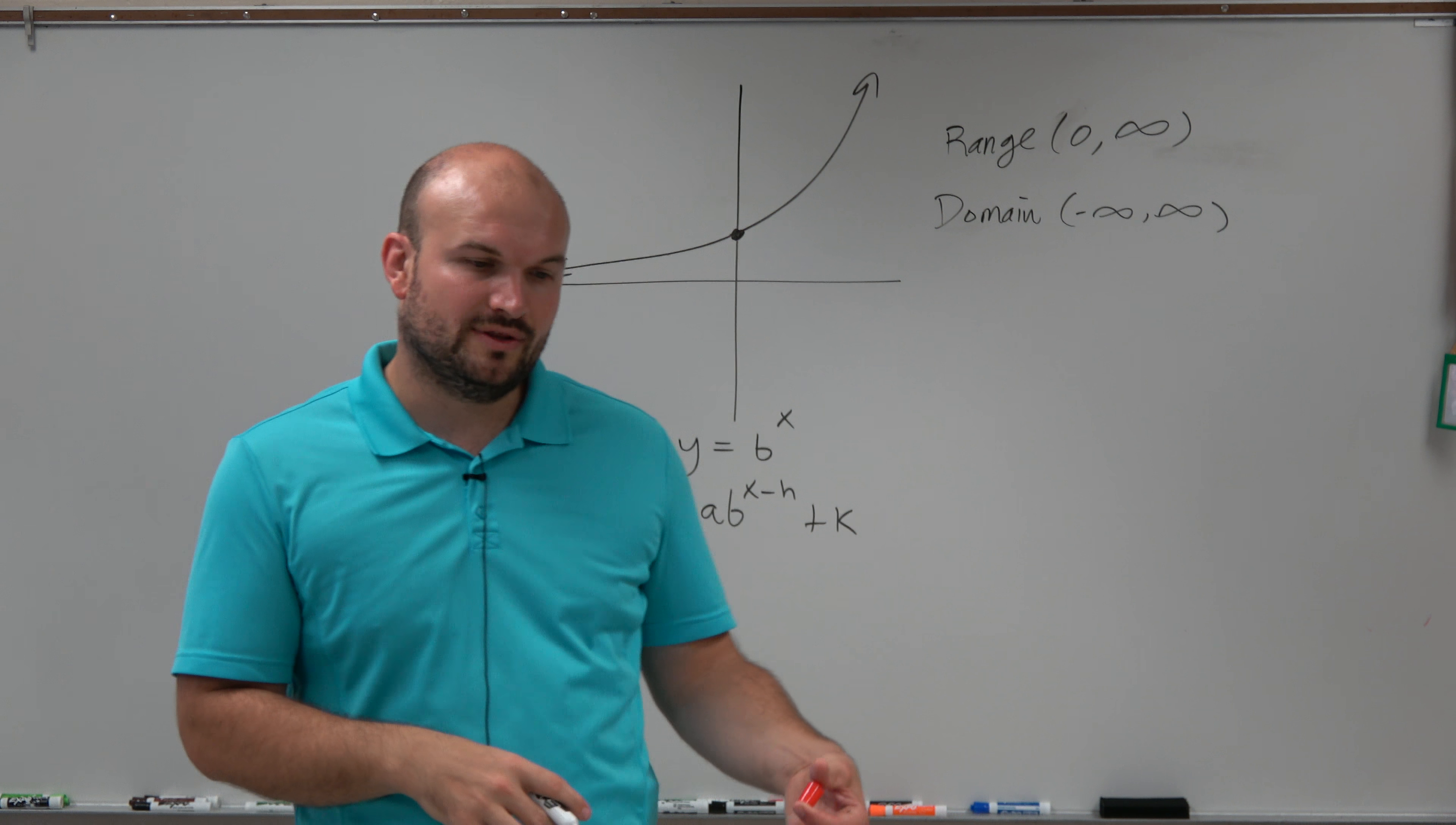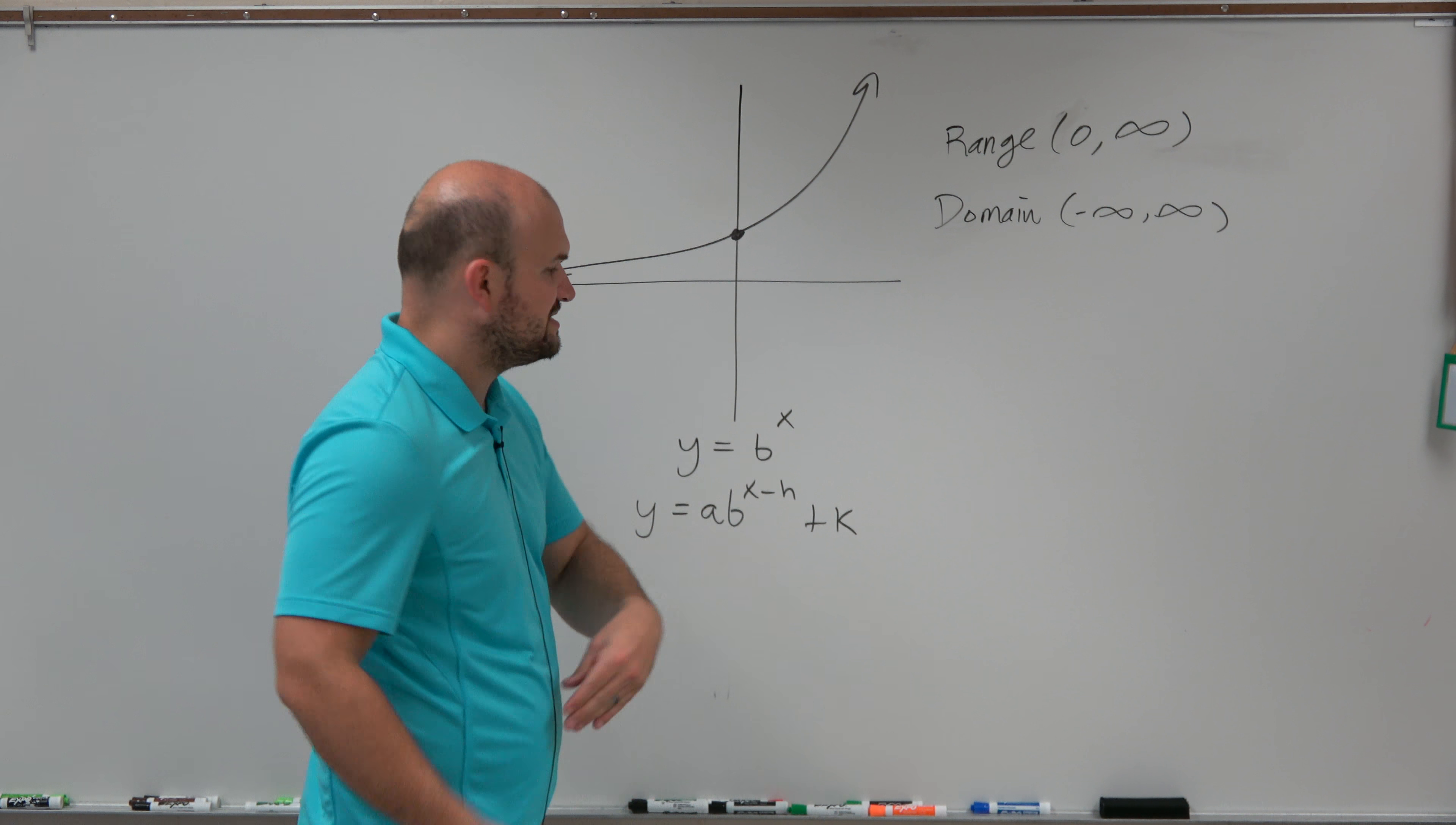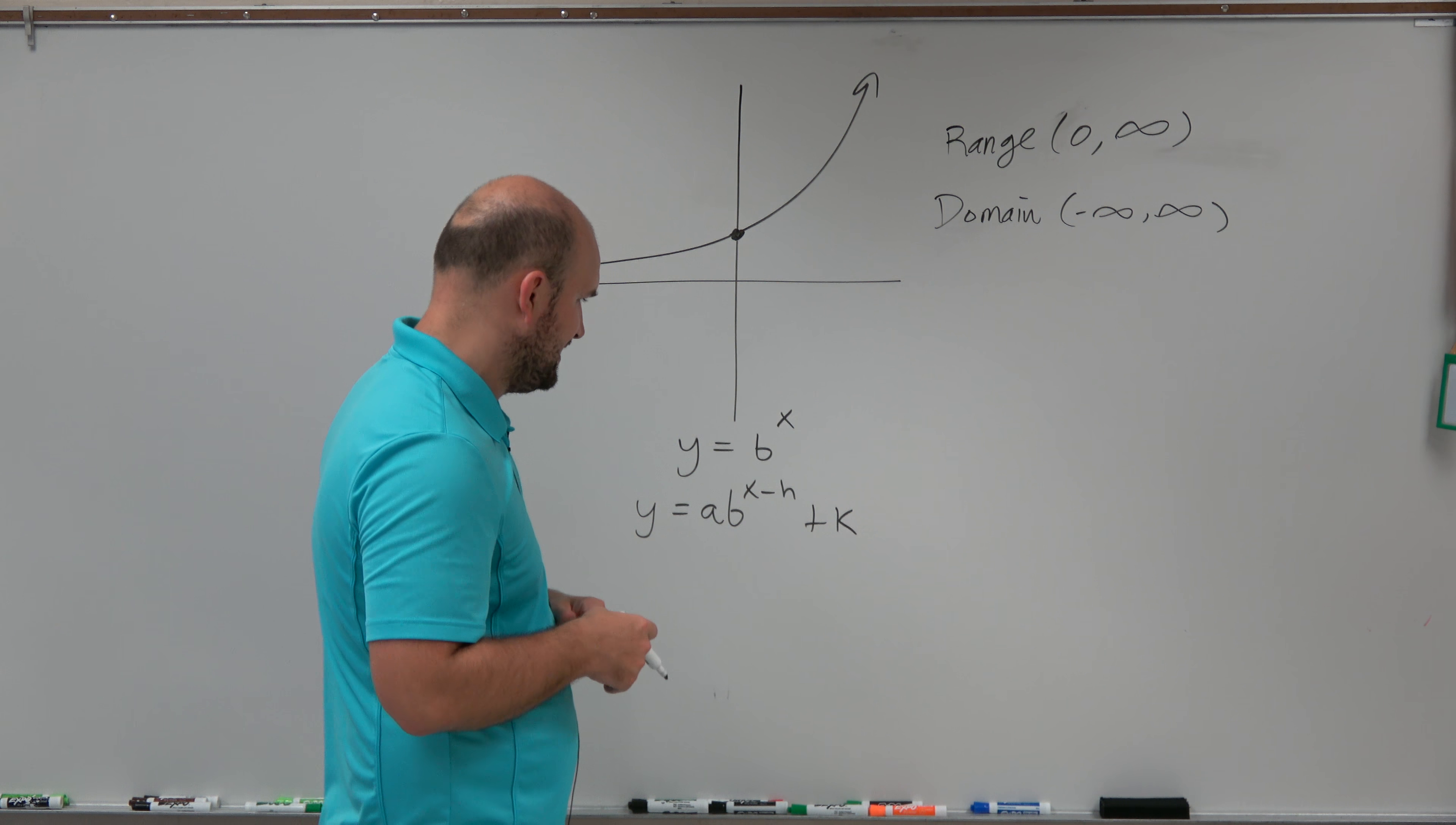Now, what I wrote below this is the transformation function of an exponential graph. Again, b represents any constant. a, h, and k also represent constants.